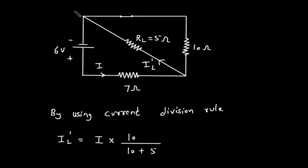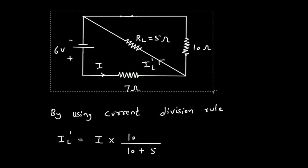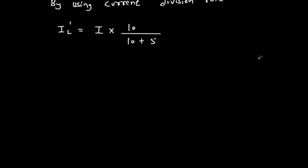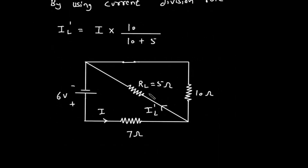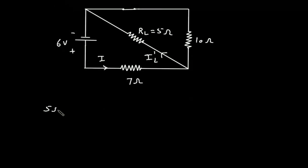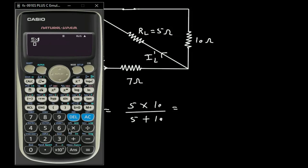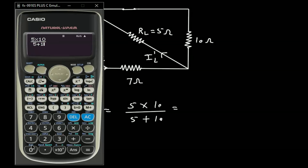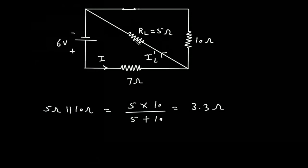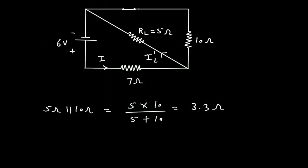First we have to find the total current I. Here we can see that this 5 ohm and this 10 ohm are in parallel. So 5 ohm parallel with 10 ohm gives 5 into 10, divided by 5 plus 10, which is 3.3 ohm. We can replace these two resistances with a single resistance of 3.3 ohm.